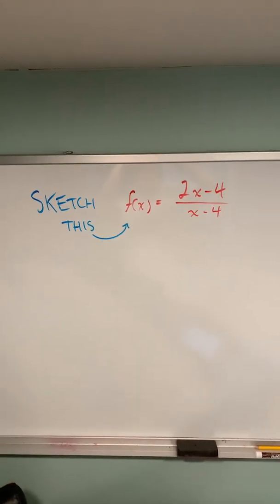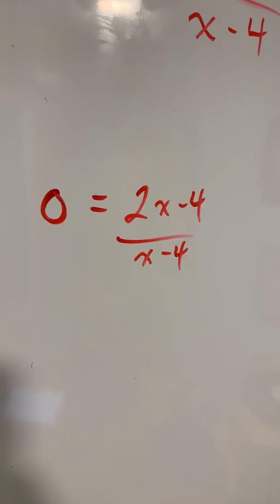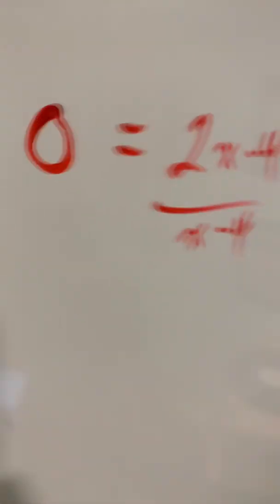Let's sketch the graph of this rational function. Let's first look at the x and y-intercepts. To find x-intercepts, we let y equal 0 and solve for x.